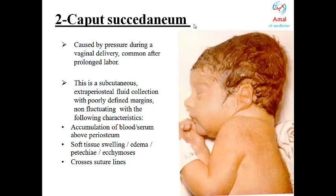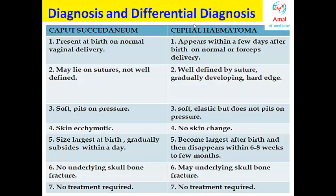In caput succedaneum, there can be skin discoloration, petechiae, and ecchymosis, which are not seen in cephalohematoma. Because it can be confusing to differentiate between caput succedaneum and cephalohematoma, a comparison table summarizes the main differences between these two types.